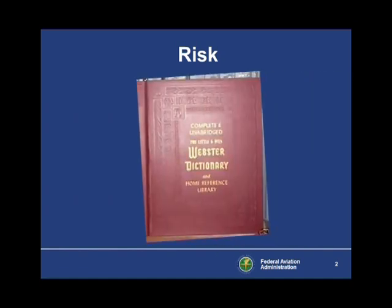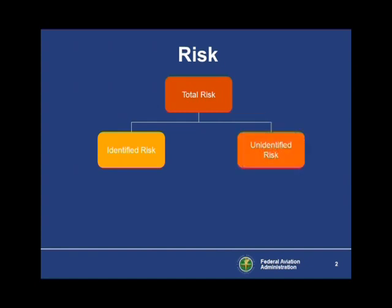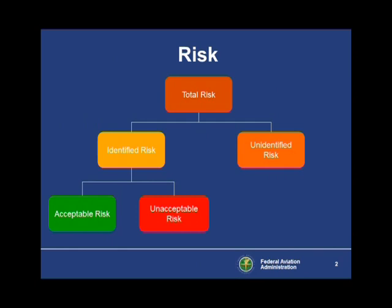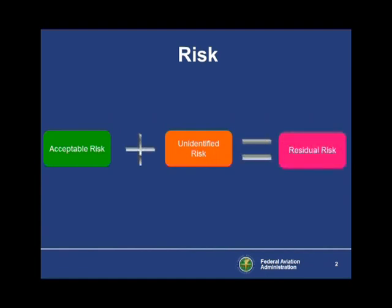Risk is defined as the future uncertainty created by a hazard. Depending on a person's skill set, the same situation will yield varied levels of risk. Total risk is the sum of identified and unidentified risks. Identified risk is risk determined through various analysis techniques. Unidentified risk has not yet been identified — some is revealed when a mishap occurs, and some is never known. Unacceptable risk cannot be tolerated and must be controlled or eliminated. Acceptable risk is allowed to persist without further action. Residual risk is the sum of acceptable and unidentified risks — the total risk passed on to you and me.